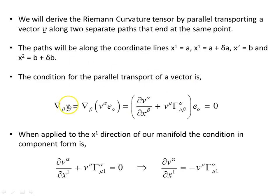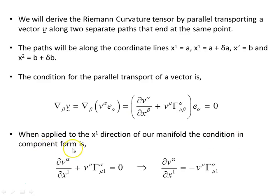The condition for parallel transport of a vector uses the covariant derivative of a vector, and the condition is that the covariant derivative is zero. When applied in the x1 direction on a manifold, the condition in component form involves dv_alpha/dx1 — the vector components changing in the x1 direction — plus the change in the basis vectors, which is the Gamma term. Setting that equal to zero, we find that dv_alpha/dx1 equals minus the vector components times the change in the basis vectors.